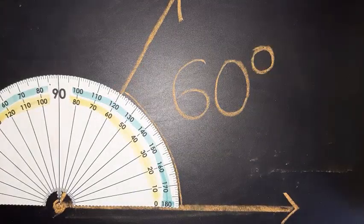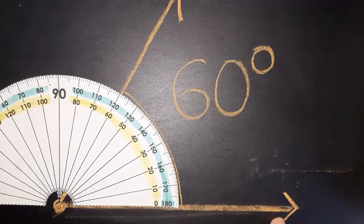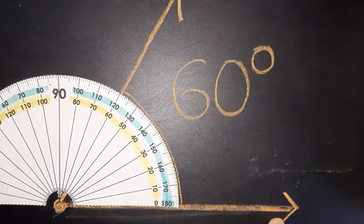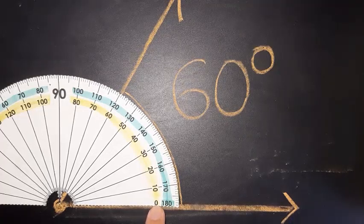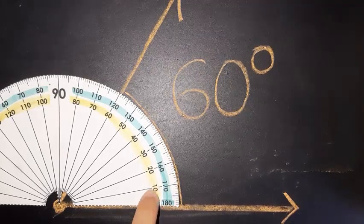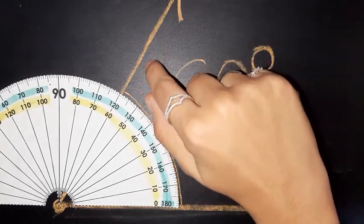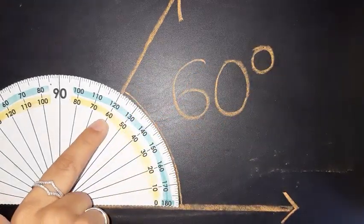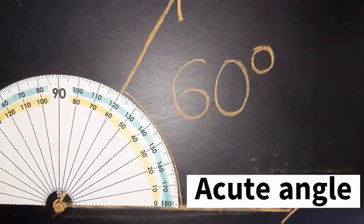Remember: the center point of the protractor goes on the vertex of the angle, and the edge marking zero degrees lines up with the bottom line of the angle. We start counting from zero using the row that starts from zero, and we count up until the part where the second line meets the protractor, which is 60 degrees. And since it measures 60 degrees, this is an acute angle.